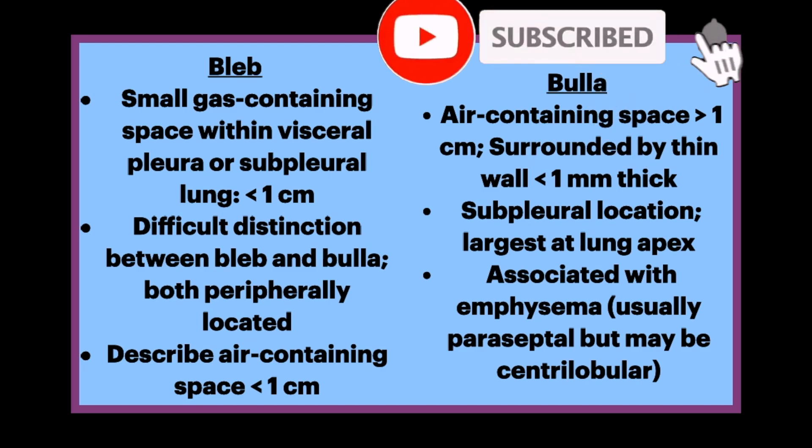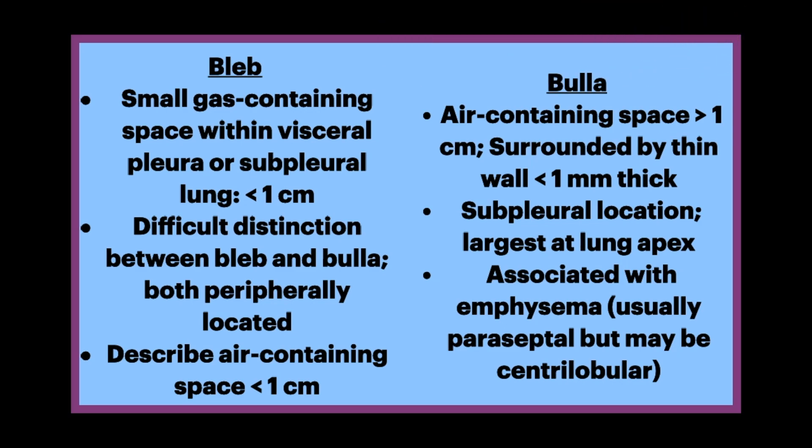A bullae appears as a thin-walled cystic airspace contiguous with the pleura. Because the arbitrary size distinction between a bleb and a bullae is of little clinical importance, the use of this term by radiologists is sometimes discouraged. Nevertheless, a bullae is an airspace measuring more than one centimeter, usually several centimeters in diameter, sharply demarcated by a thin wall no greater than one centimeter in thickness. A bullae is usually accompanied by emphysematous change in the adjacent lung.